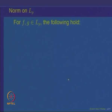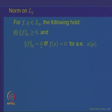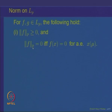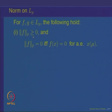We want to show that the P-th norm has the following properties: first, ‖F‖_P ≥ 0 always, which is obvious because we are integrating a non-negative function. Moreover, ‖F‖_P = 0 if and only if F(x) = 0 almost everywhere, since if the integral of |F|^P is 0 and |F|^P is non-negative, then F must be 0 almost everywhere. This is similar to what we established when P = 1 for the space of integrable functions.